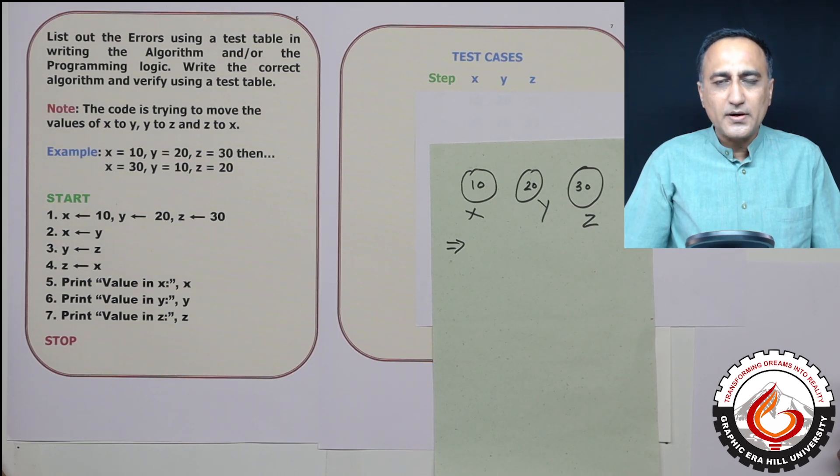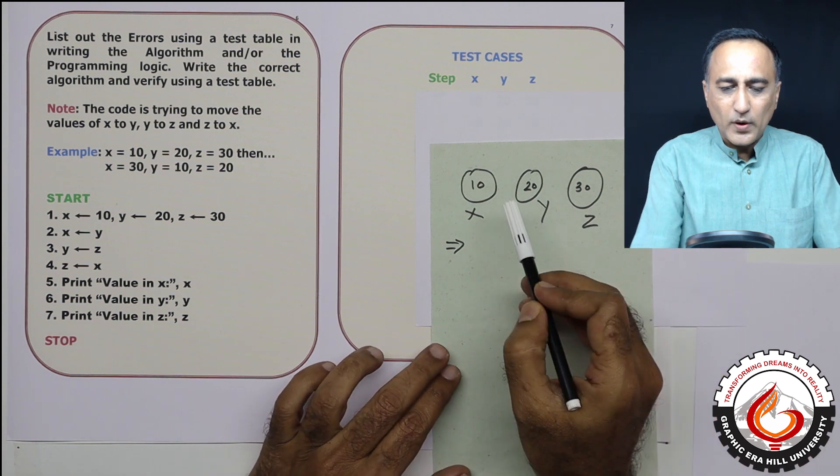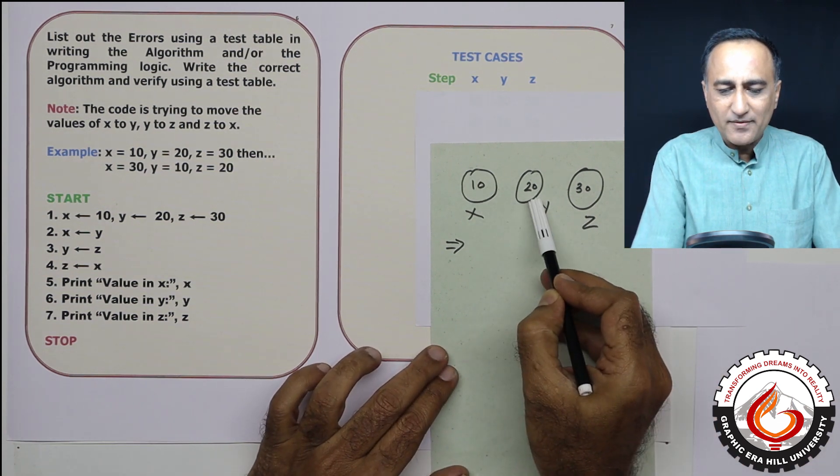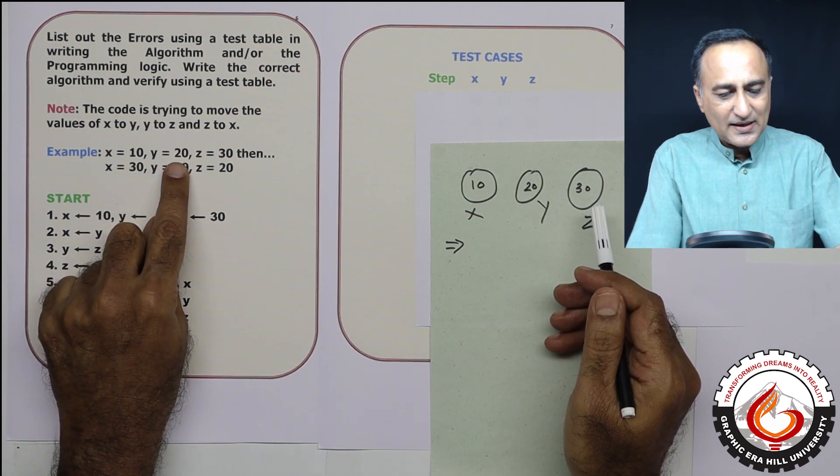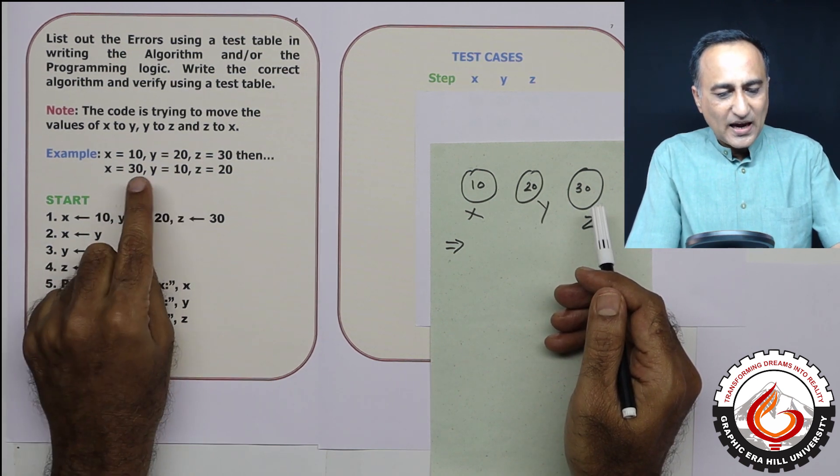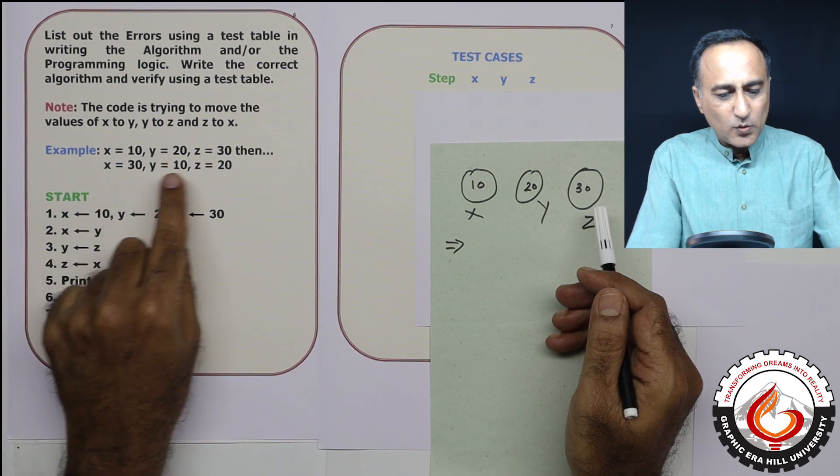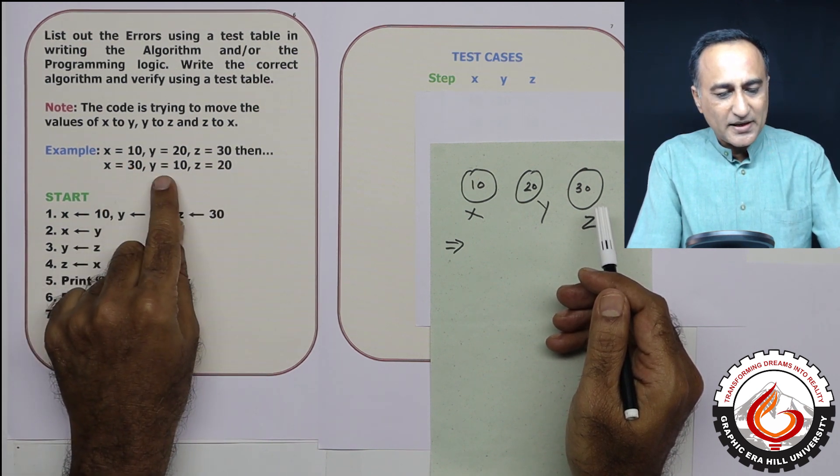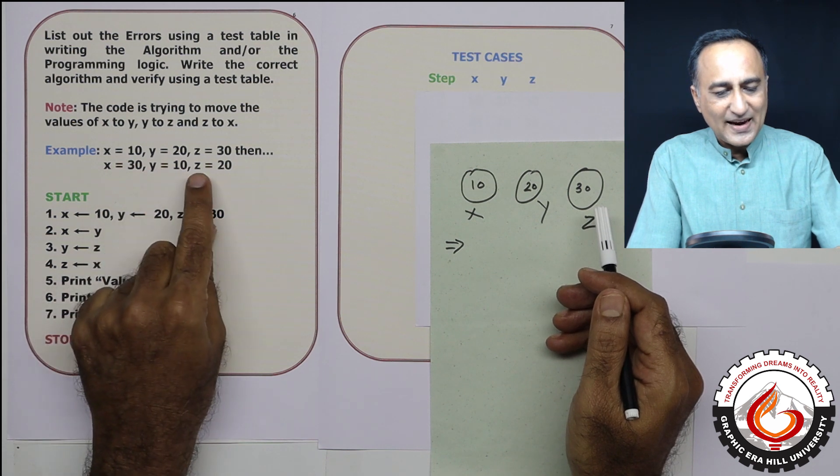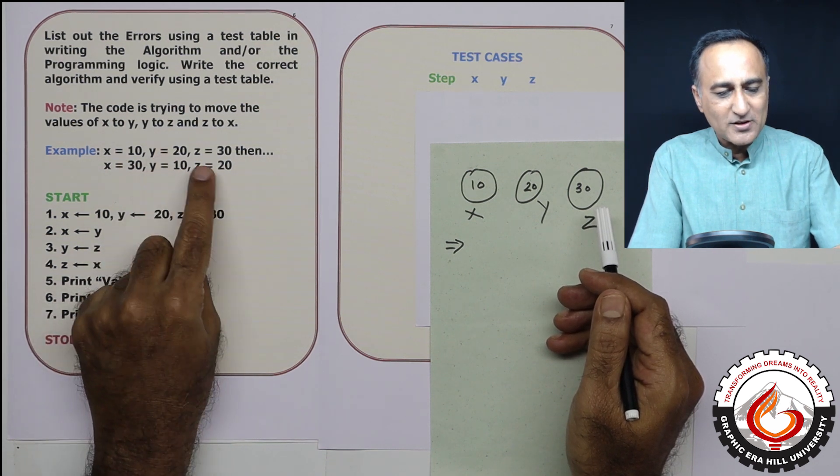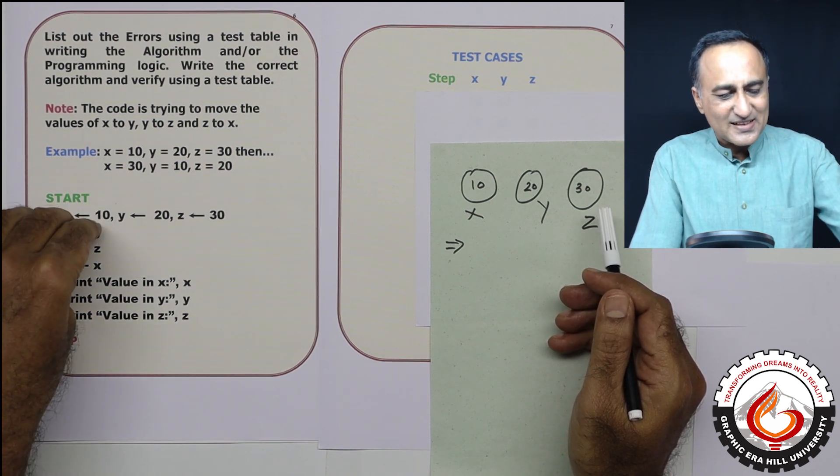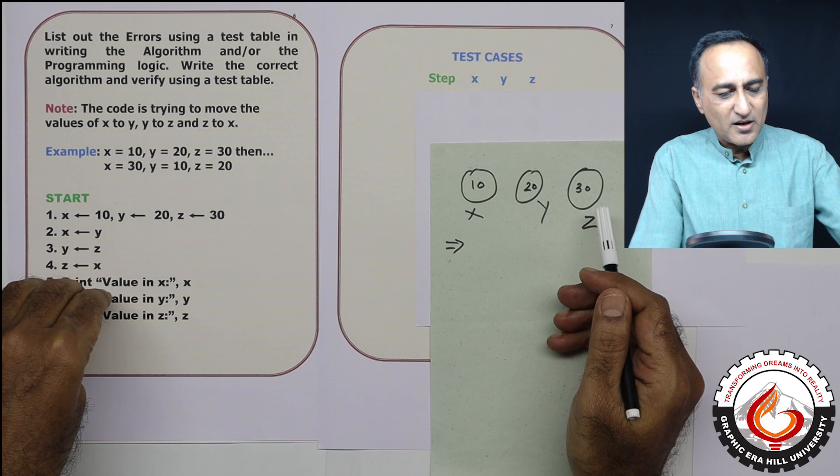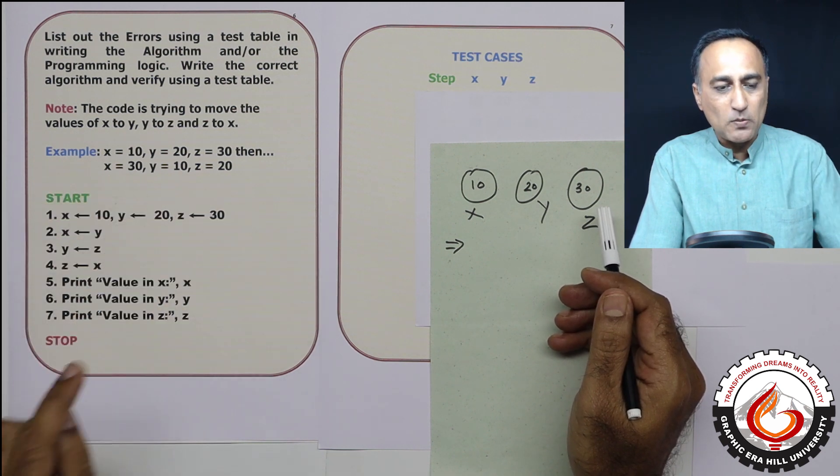We shall now try to take a look at a code where I am required to move the value of x to y and y to z. Now what has happened here is somebody has written a series of steps trying to do what the problem has asked.